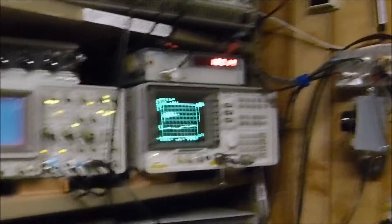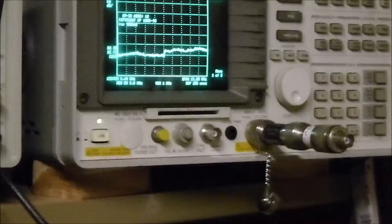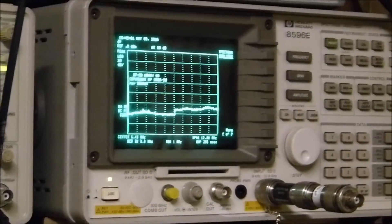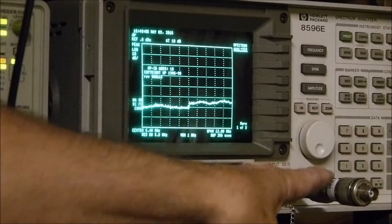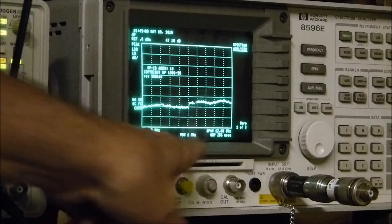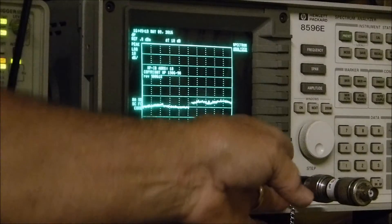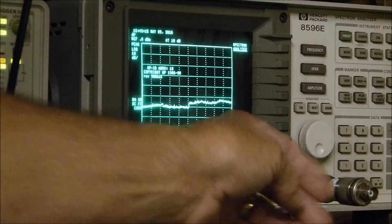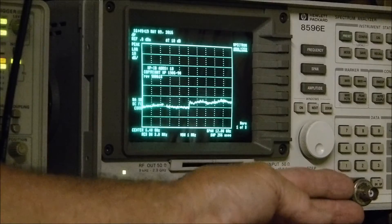On a spectrum analyzer like this beauty up here, you have to be extremely careful because the maximum DC is zero or you'll destroy the front end. That's why I use a capacitor coupler. The absolute maximum input is one watt, so I use a 20 dB attenuator.